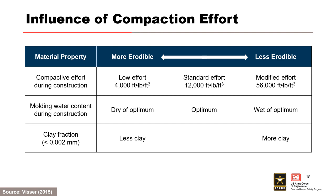Erosion resistance increases with compaction effort, and for soils compacted wet of optimum and with increasing clay fraction. The table on this slide shows the relationship between compaction effort and erosion resistance based on testing at the USDA's Agricultural Research Service. The rate of erosion is higher if compaction occurs dry of optimum because soil can form aggregated particles and/or micro cracks which allow erosion of blocks of soil.